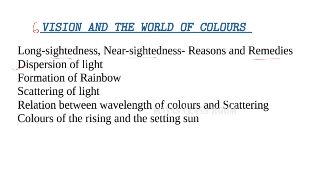Dispersion of light includes rainbow formation — where the rainbow forms, what colors appear, and where the raindrops are involved. Scattering of light is also an important topic. We discuss the relationship between wavelength and color.